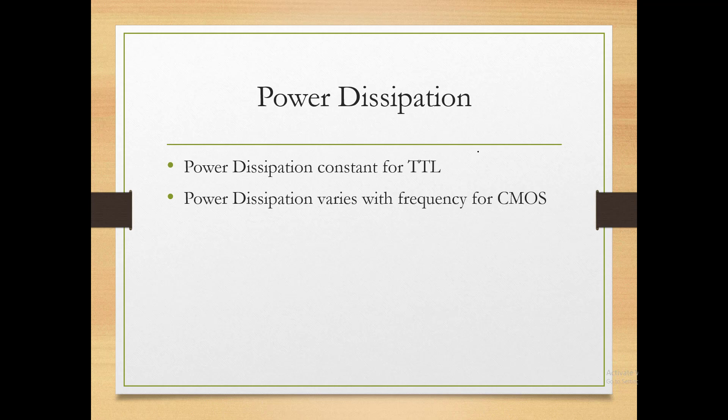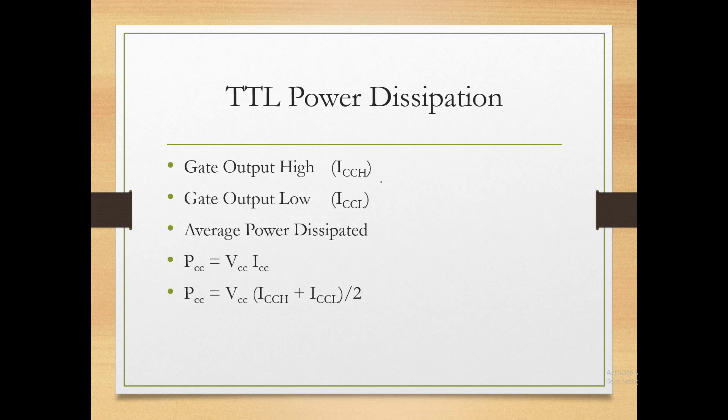Next, let's discuss power dissipation — power dissipation constant for TTL and for CMOS. Any electronic component requires power to operate. The more power it consumes, the more heat dissipation occurs, and we need alternate cooling methods.